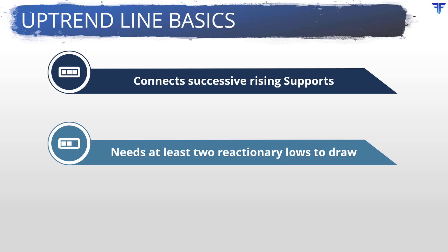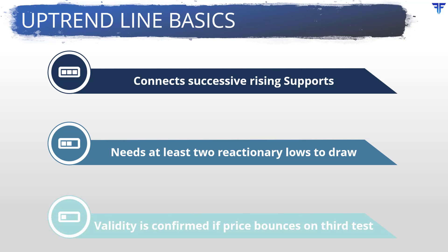Going forward, when the price experiences a correction and approaches the uptrendline, one of two things could happen. Number one, price could take support at or near the uptrendline and bounce off it, or number two, price could break below the uptrendline. If price takes support at or near the uptrendline and bounces off it, the validity of this uptrendline is confirmed. If not, the uptrendline becomes invalid.